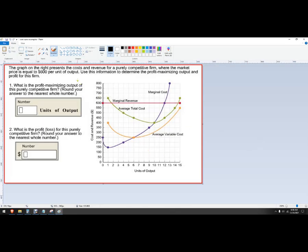Hello, in this problem we've got a perfectly competitive firm trying to decide how many units to produce. The graph on the right represents the cost and revenue of a perfectly competitive firm where the market price is $600 per output. This means everybody is a price taker. This firm has to choose $600 per price.